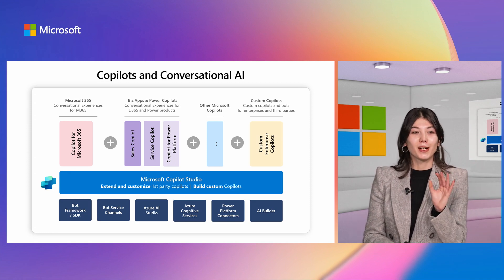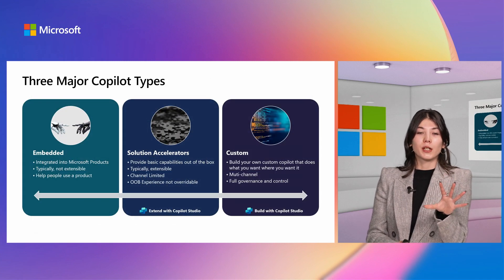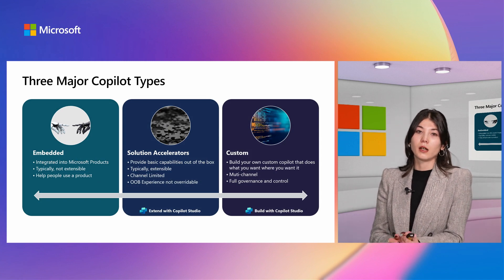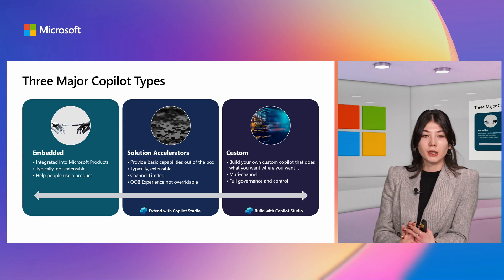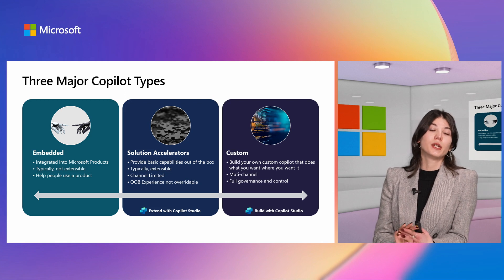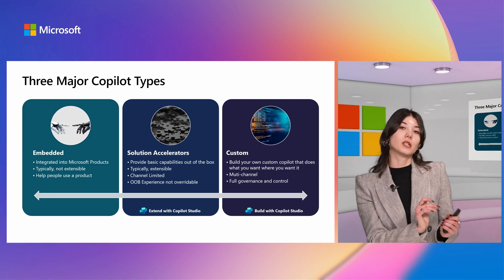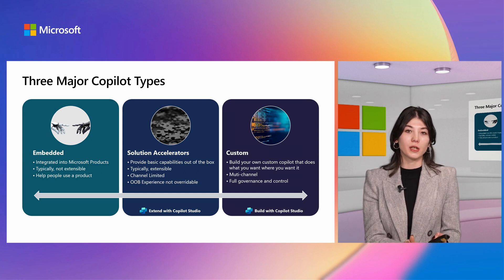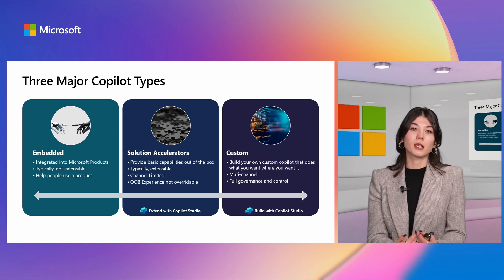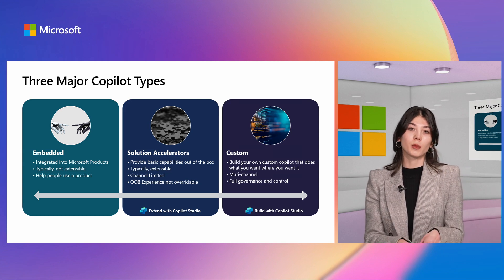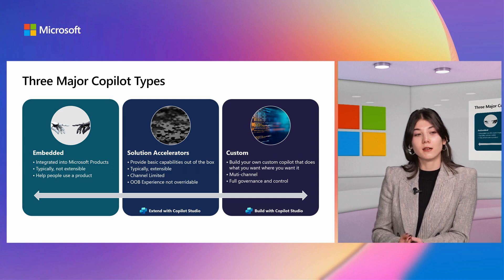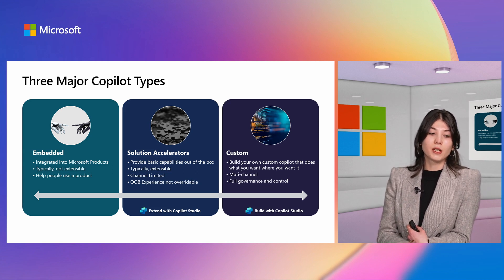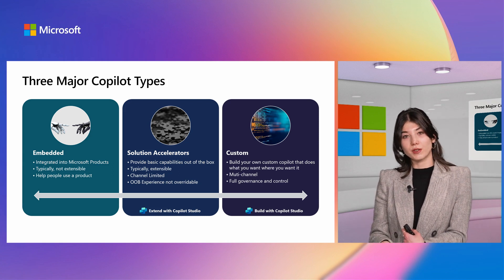There are three major types of copilots in the Microsoft ecosystem. First, embedded copilots — these are integrated within our products, come out of the box, and typically cannot be extended. For example, Copilot for Microsoft Power Platform, as seen in the PowerApps Copilot and Power Automate Copilot webinars, is built into the product and helps you build solutions, such as describing what you want your application to look like and getting a software suggestion.